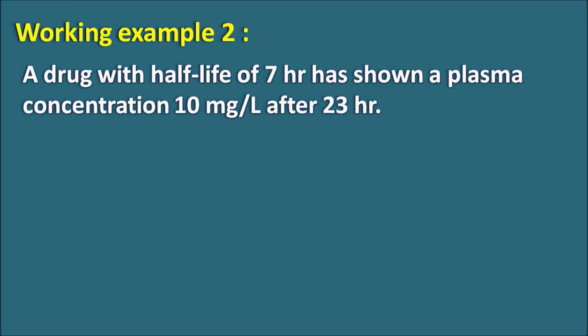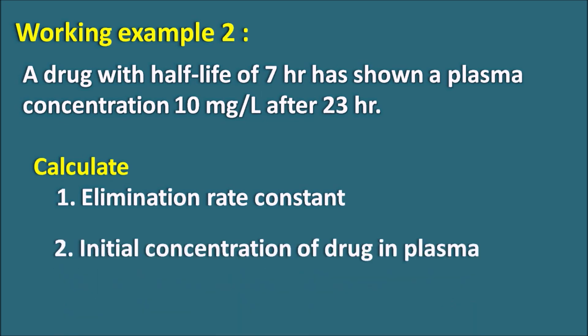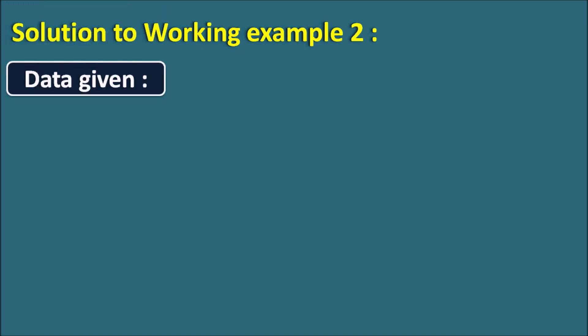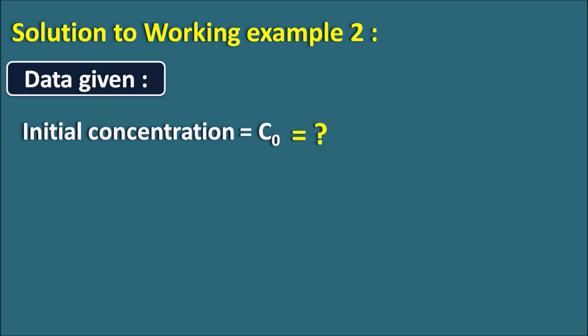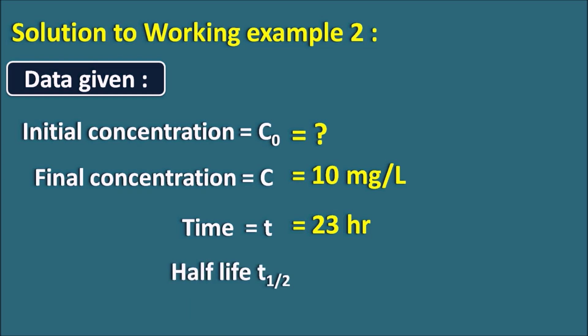Working example 2: A drug with a half-life of 7 hours has shown a plasma concentration of 10 mg per liter after 23 hours. Calculate the elimination rate constant as well as the initial concentration of the drug in the plasma. The data given: C is 10 mg per liter, t equals 23 hours, and half-life equals 7 hours. C-naught is unknown and must be found.